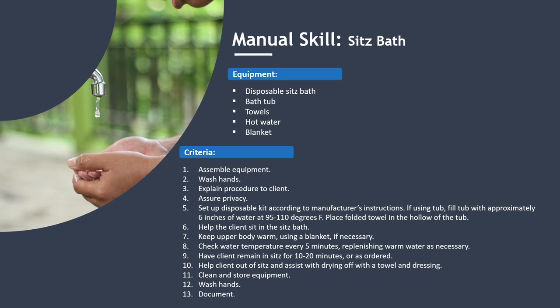Manual Skill: Sitz Bath. Equipment: disposable sitz bath, bathtub, towels, hot water, and a blanket. Criteria: assemble equipment; wash hands; explain the procedure to the client and assure privacy. Set up a disposable kit per manufacturer's instructions. If using a tub, fill with approximately 6 inches of water at 95 to 110 degrees Fahrenheit and place a folded towel in the hollow of the tub. Help the client sit in the sitz bath and keep their upper body warm with a blanket if necessary. Check water temperature every 5 minutes, replenishing warm water as needed. Have the client remain in the sitz bath for 10 to 20 minutes or as ordered. Help the client out, assist with drying and dressing. Clean and store equipment, wash hands, and document.